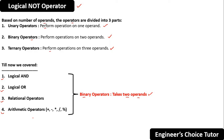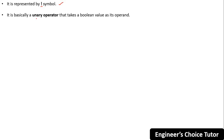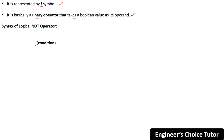Now let's start the logical NOT operator. It is represented by the exclamation mark symbol. It is basically a unary operator that takes a boolean value as its operand — only one operand, and that operand takes a boolean value. The syntax is simple: exclamation mark followed by the condition.